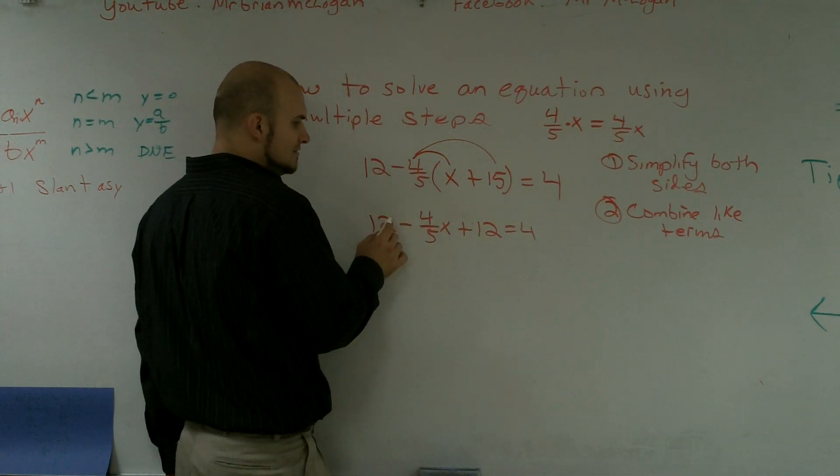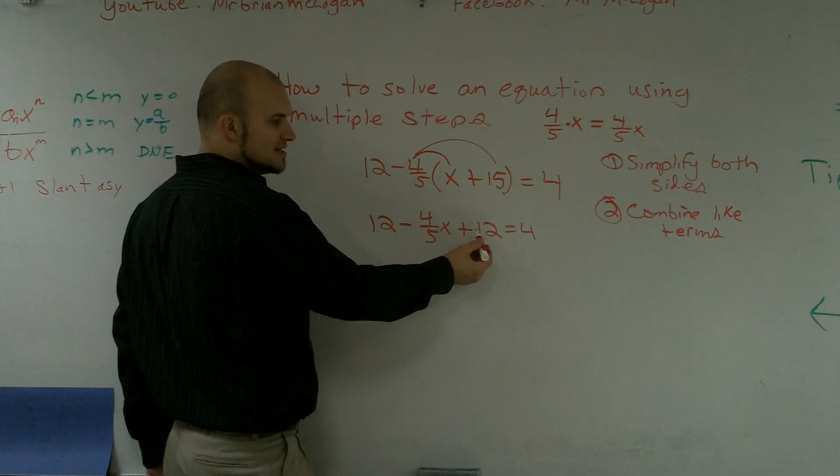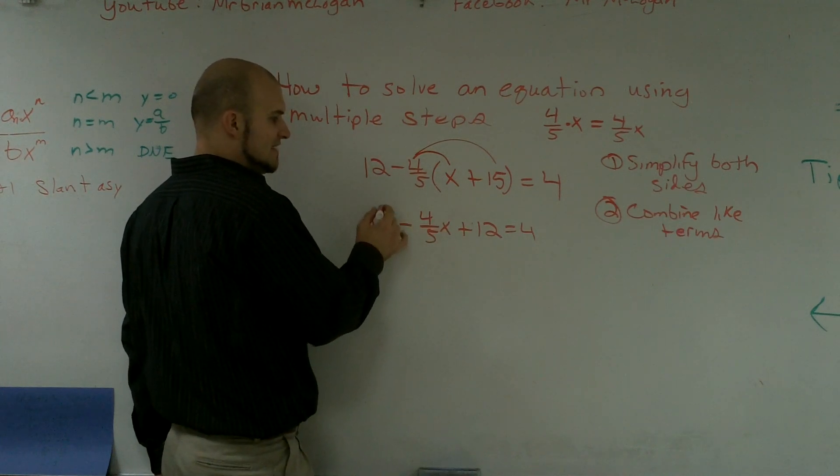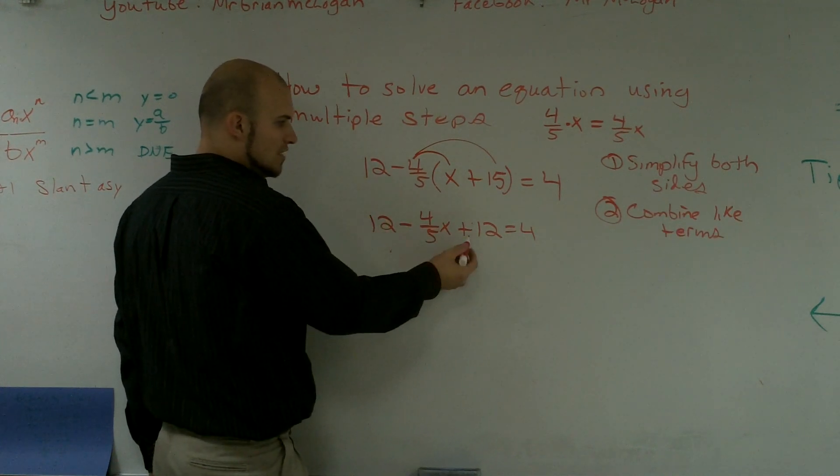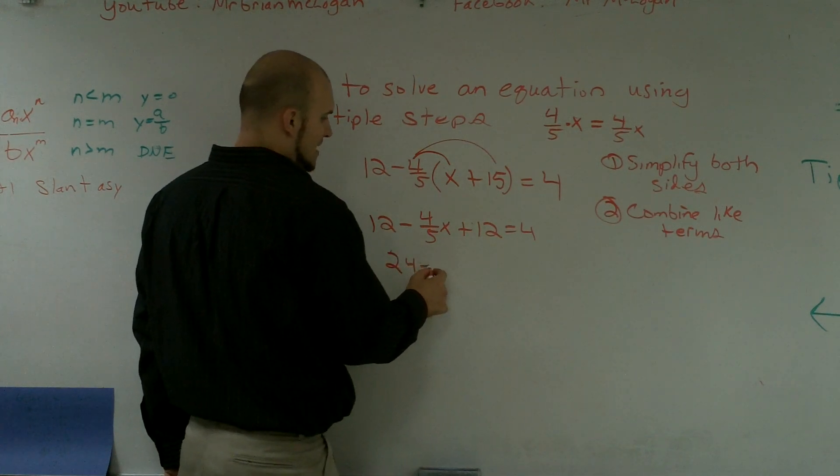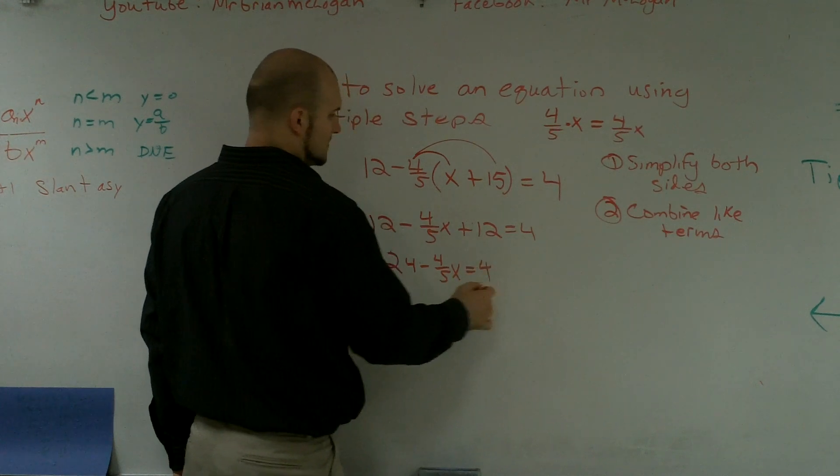Over here though, I have 12 plus 12. The reason why it's plus 12 is because in front of this number is an addition, so I know it's positive. I know there's a subtraction sign, but if I pull these out, I have a positive 12 plus another positive 12. So that's 24 minus 4/5 x equals 4.